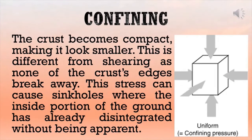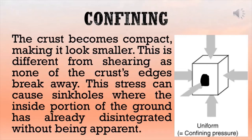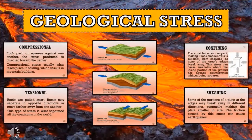The last type is confining stress, where the crust becomes compact, making it look smaller. This is different from shearing, as none of the crust's edges break away. This stress can cause sinkholes where the inside portion of the ground has already disintegrated without being apparent. If breaking occurs, it comes from the inside — retaining the shape of the crust but not its mass. In short, nothing may seem strange in the appearance of the crust because changes have occurred inside. Those are the four types: compressional, tensional, shearing, and confining stress.